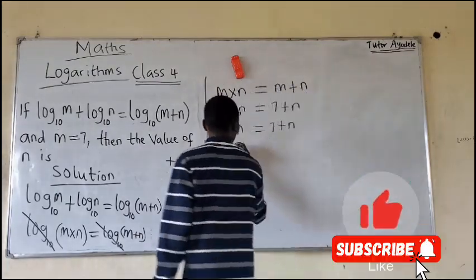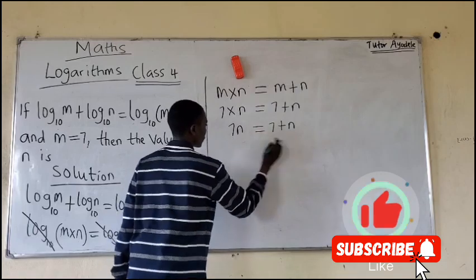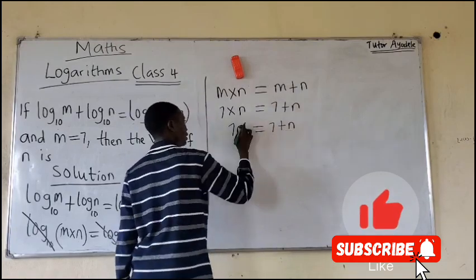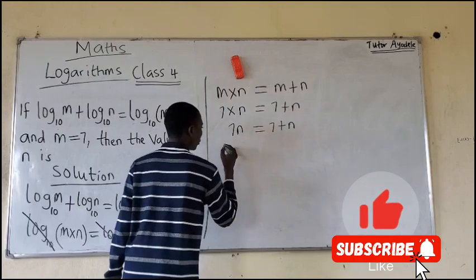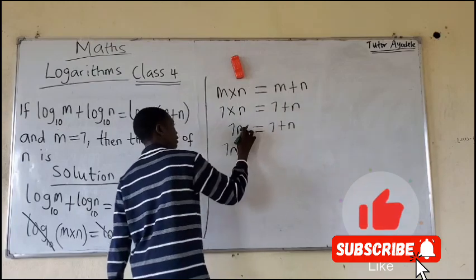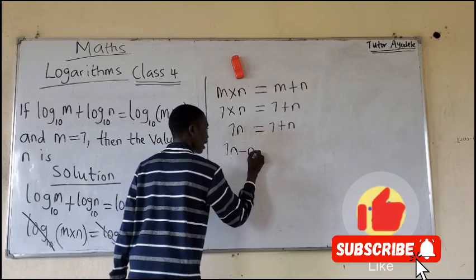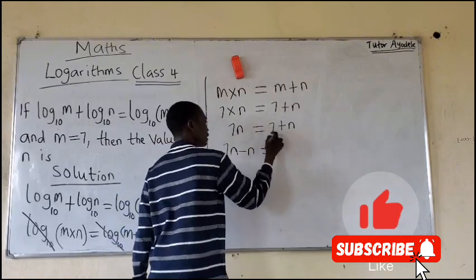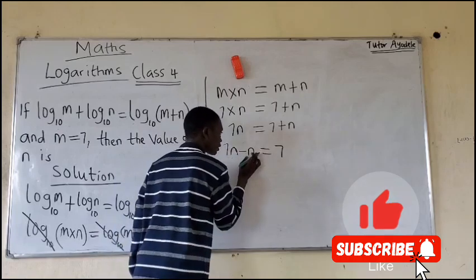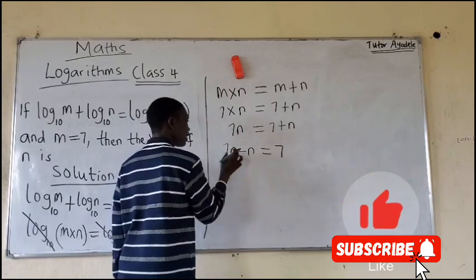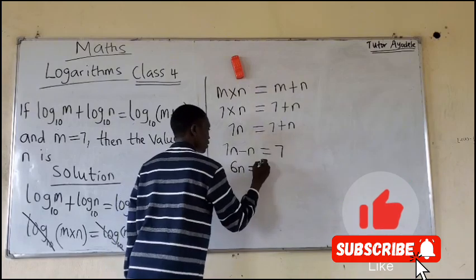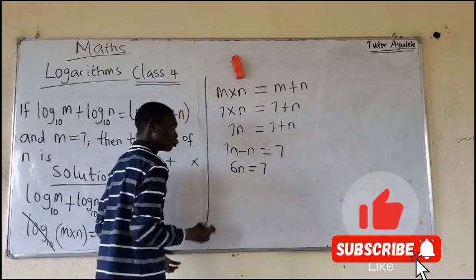7 times N will give you 7N equals 7 plus N. So what you are to do is collect like terms. You bring this N to this other side. So that will be 7N. When this N crosses this equality side, it will be minus N. We are now left with 7. So 7N minus N will give you 6N equals 7.